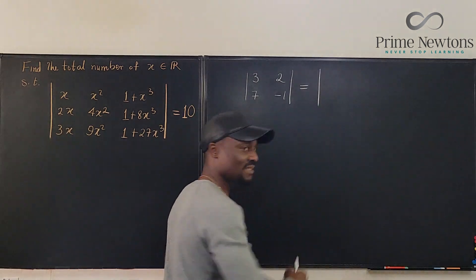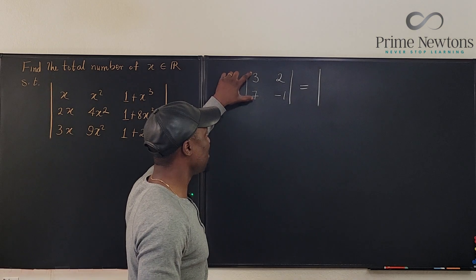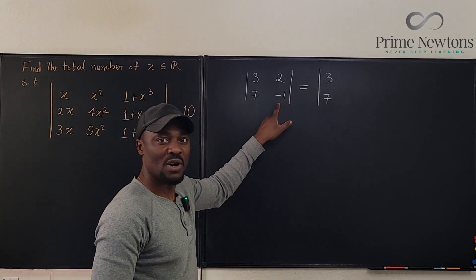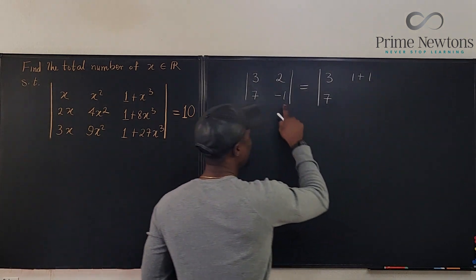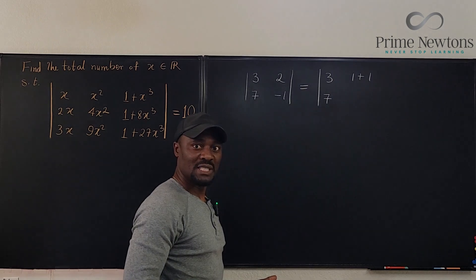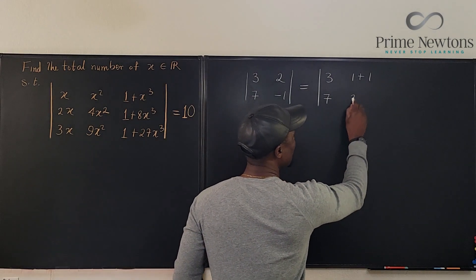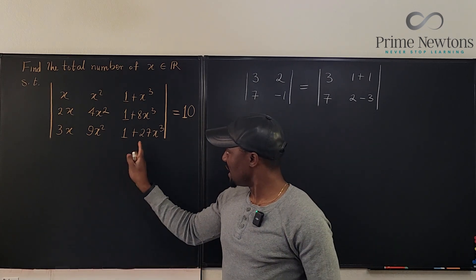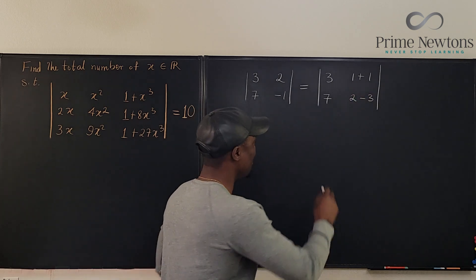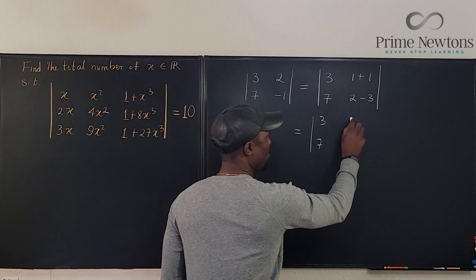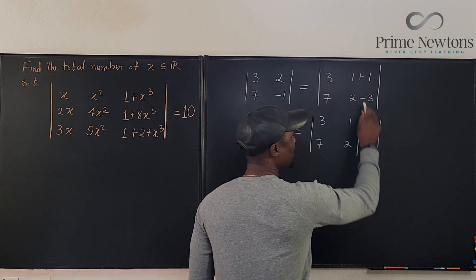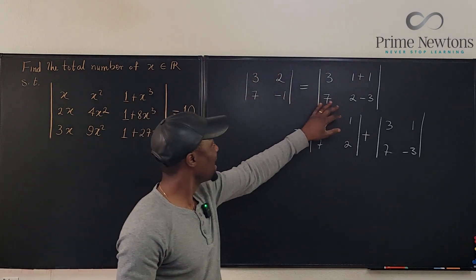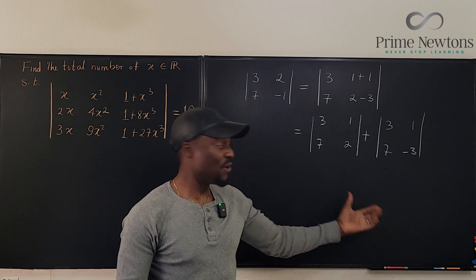You can rewrite this determinant as the sum of two determinants. Watch this: if I keep one column as 3, 7, and write the other column as, say, 1+1 and -1+0 (or equivalently 2-3), then you can split this into two determinants — one with 3, 7 and column 1, 2, and another with 3, 7 and column 1, -3. If you compute these determinants, you still get the same answer as the original.